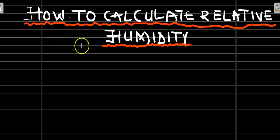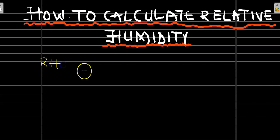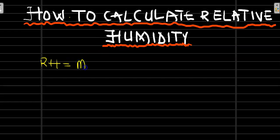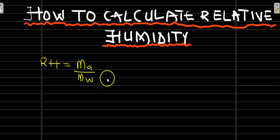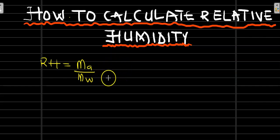Hello. In this video we are going to focus on how to calculate relative humidity. The formula for calculating relative humidity depends on the question available to you. For instance, relative humidity equals the mass of water vapor in a given volume of air, divided by the mass of water vapor required to saturate the same volume of air at the same temperature — that is M_A over M_U — times 100%.